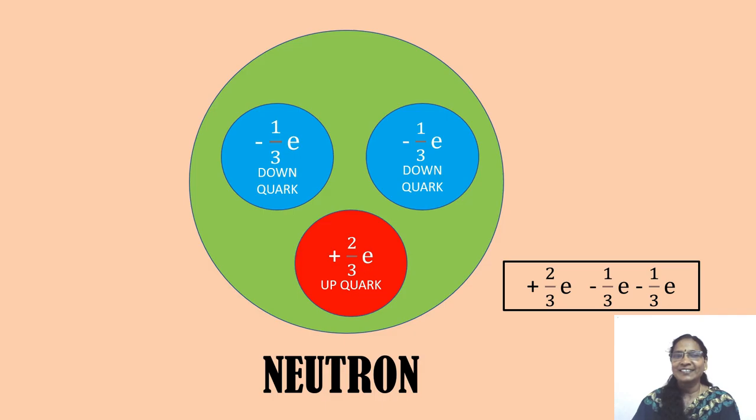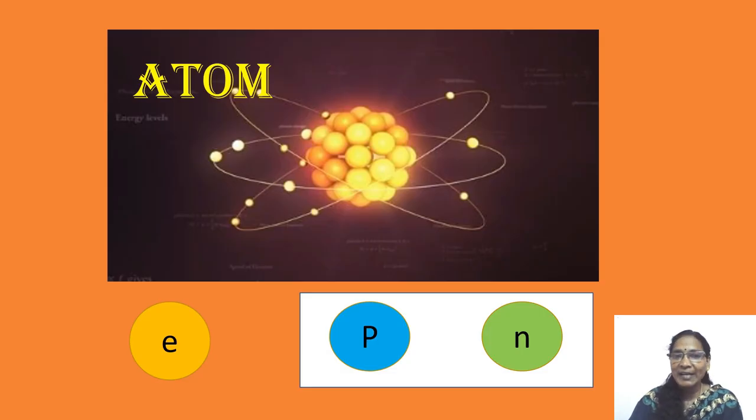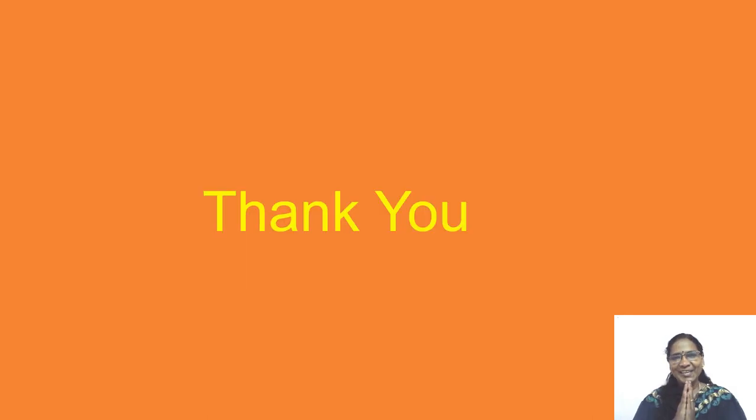Right? So, for an atom, electron is a fundamental particle and proton and neutron are not fundamental particles. Thank you.